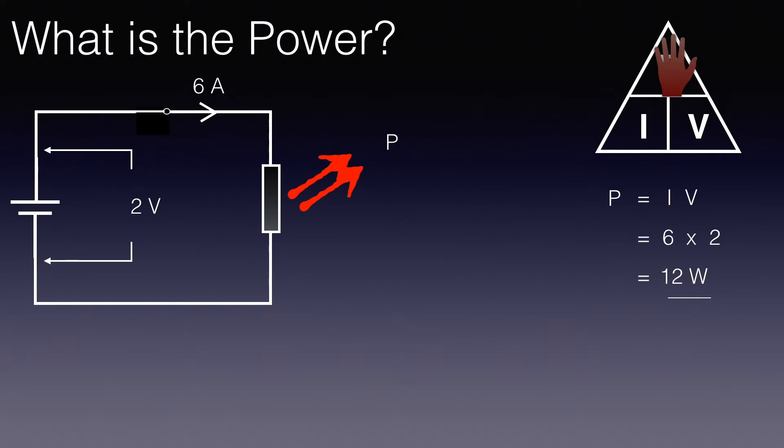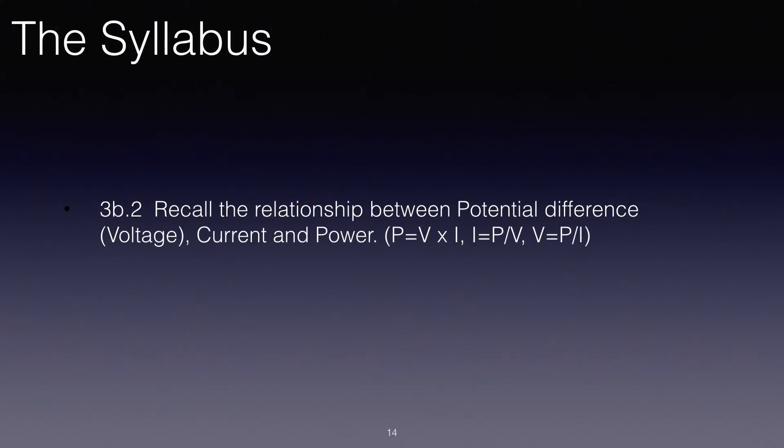So let's look at the syllabus again. The syllabus says recall the relationship between potential difference or voltage, current and power: P equals VI, I equals P over V, and V equals P over I. And it says calculate the unknown quantity given the numerical value of the other two. Well we did two examples there. We didn't calculate V given P and I, but that would be an easy one to do, and as I say we'll practice some of those in class.